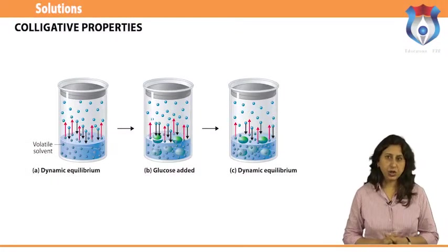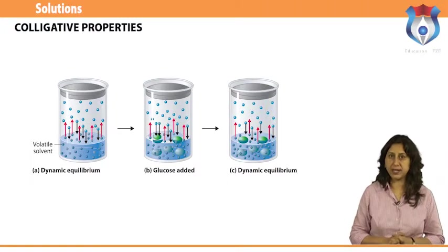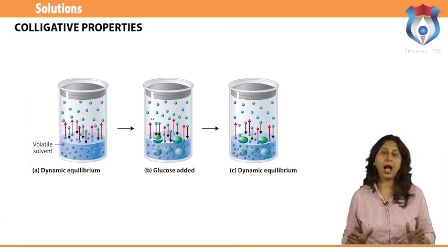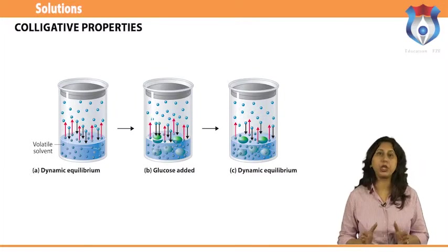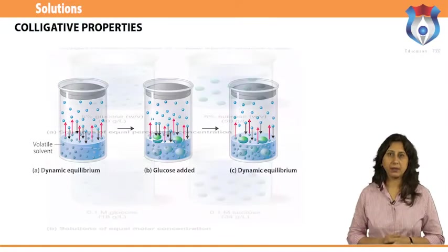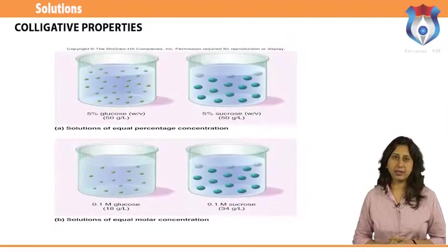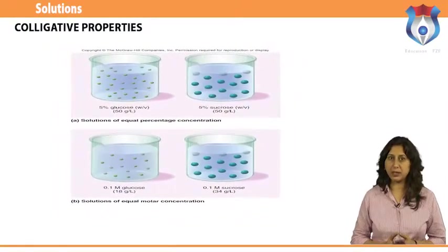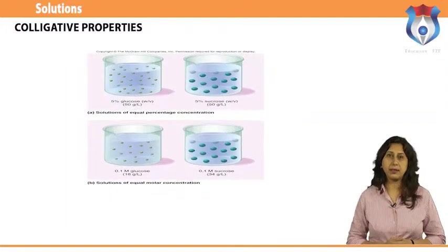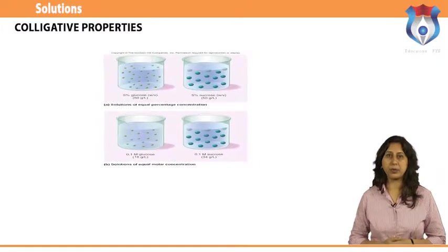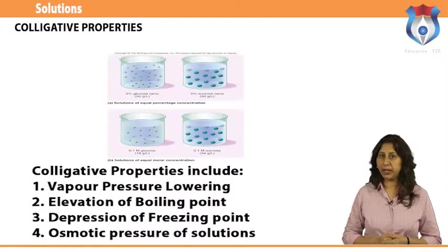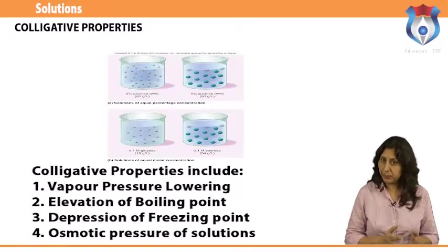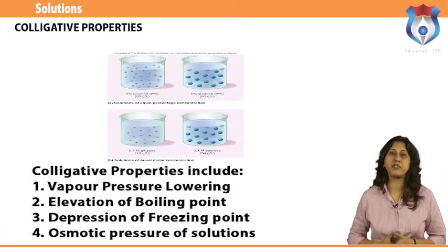Properties of solutions that depend on the number of molecules present and not on the kind of molecules are called colligative properties. Colligative properties have been one means for determining the molecular weight of unknown compounds. They depend on the number of solute particles, not the nature of the solute particles — particles being atoms, ions, or molecules. Colligative properties include: vapor pressure lowering, elevation of boiling point, depression of freezing point, and osmotic pressure of solutions.